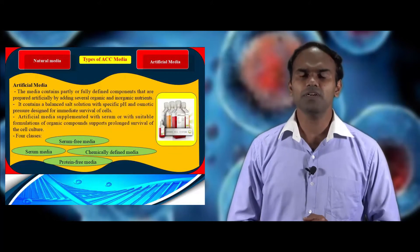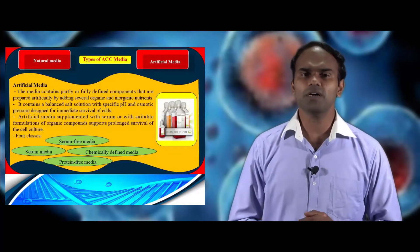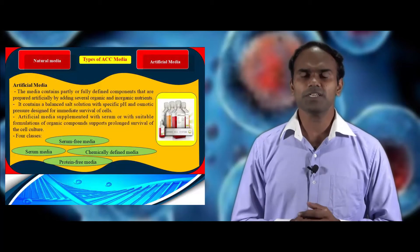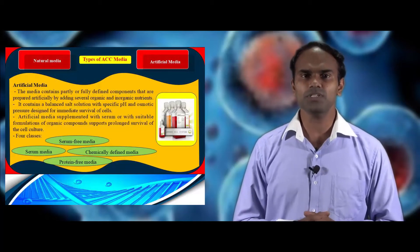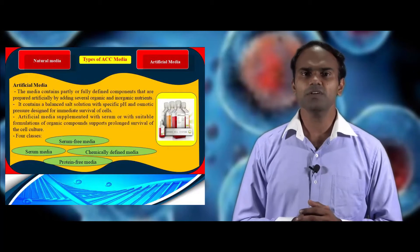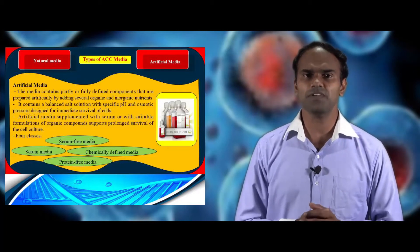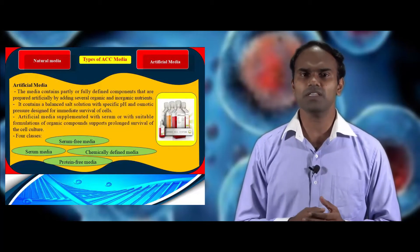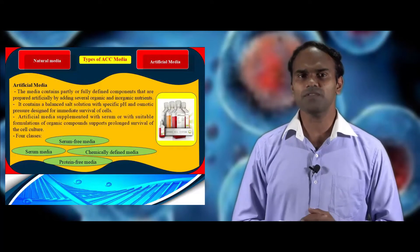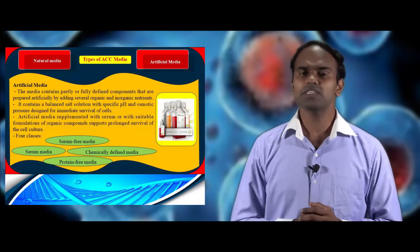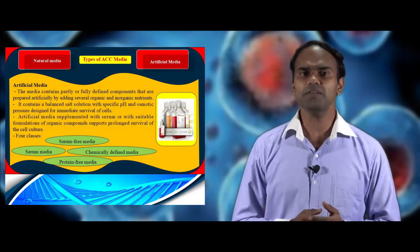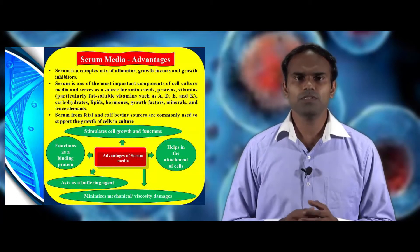Tissue extracts include spleen, liver and bone extract. The most widely used tissue extract in animal cell culture media is chicken embryo extract. Now we see about artificial media. It contains partly or fully defined compounds prepared artificially by adding several organic or inorganic nutrients. This is a balanced salt solution with optimal pH and osmolality which offers immediate survival of cells. When supplemented with serum or other organic compounds, it supports prolonged survival. Artificial media is of four types: serum media, serum-free media, chemically defined media and protein-free media.